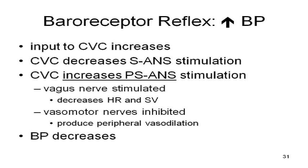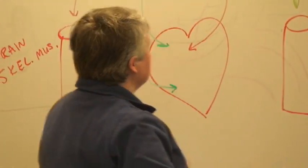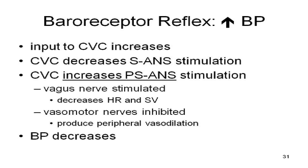If blood pressure increases, and those baroreceptors are detecting too much pressure, they send input to the cardiovascular centers. What that does is decrease sympathetic stimulation and increase parasympathetic. Blood pressure is too high — we need to back everything off. Remember the vagus nerve, cranial nerve number 10, carries about 70 to 80% of the parasympathetic output. It says slow the heart down, quit contracting it strongly, the pressure is too high — decrease cardiac output. Then it inhibits the vasomotor nerves, decreasing vasoconstriction signals, causing vasodilation, and that brings blood pressure down.